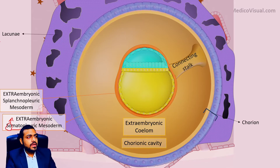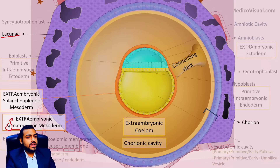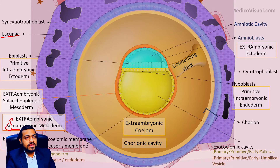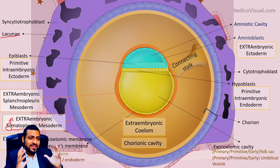Meanwhile, the lacunae were formed in the syncytiotrophoblast, and the rest of the structures — you know their names already.